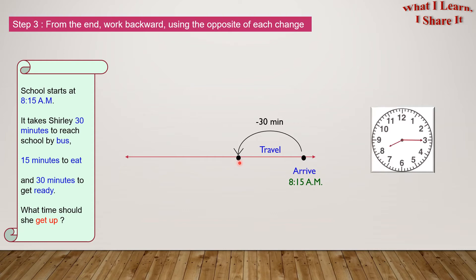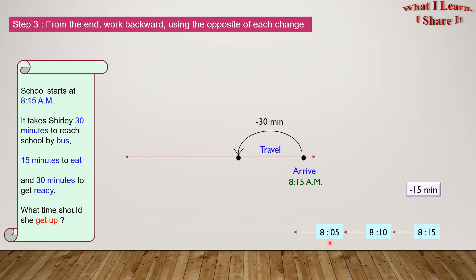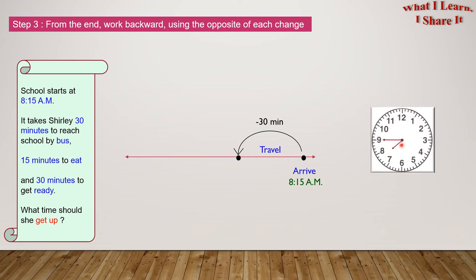So, we're working backward and minus 30 minutes. So, 8:15. Five minutes earlier would be 8:10. Ten minutes earlier would be 8:05. Ten minutes earlier would be 8 o'clock, 7:55. Twenty minutes earlier would be 7:55. Twenty-five minutes earlier would be 7:50. And here's 7:45 AM.